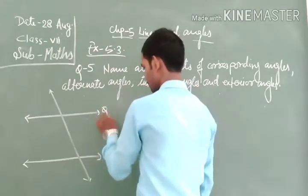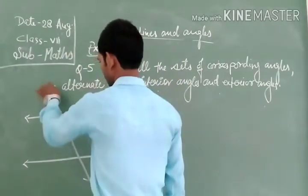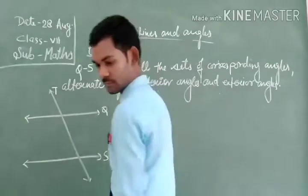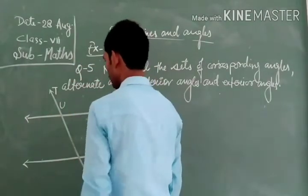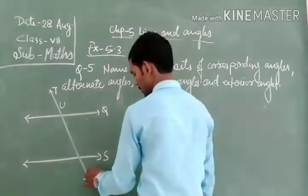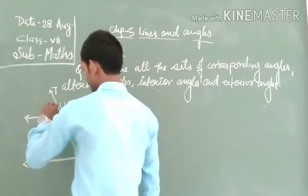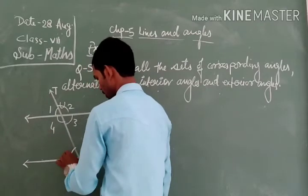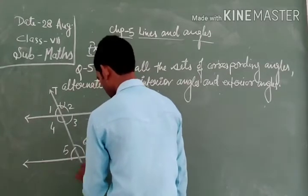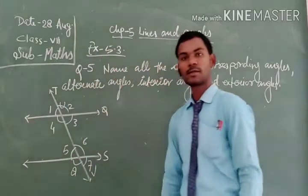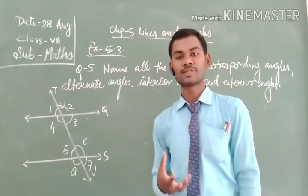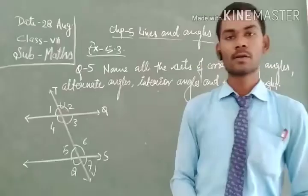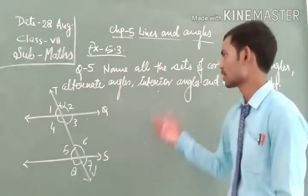The figure is named Q and S, and P is the transversal. The point where the transversal cuts line Q is U, and the point where the transversal cuts line S is V. The angles are labeled angle 1, angle 2, angle 3, and angle 4 at point U, and similarly angle 5, angle 6, angle 7, and angle 8 at point V. We shall find the sets of corresponding angles, alternate angles, interior angles, and exterior angles.